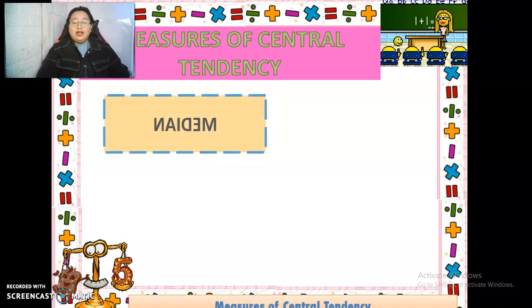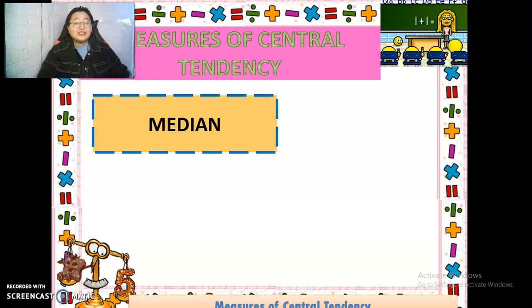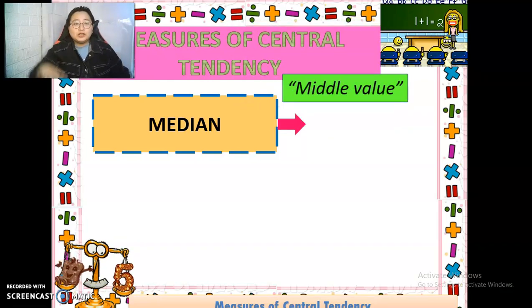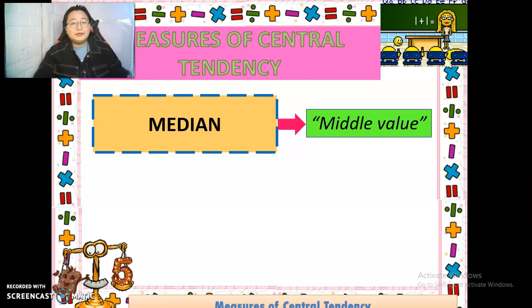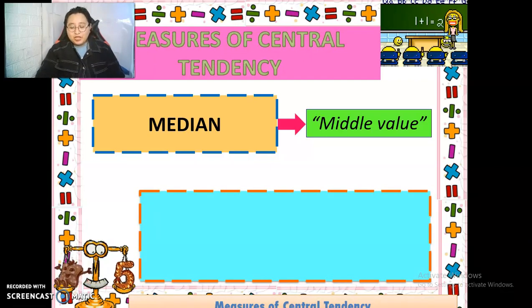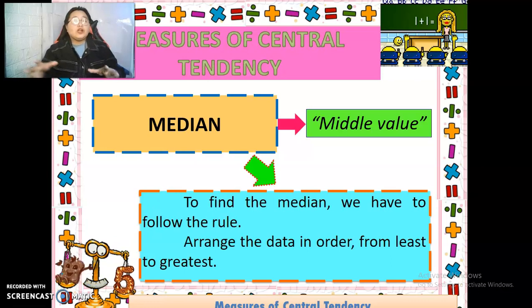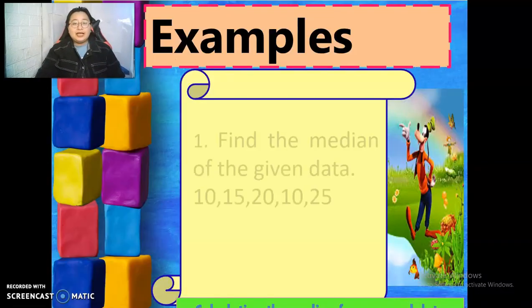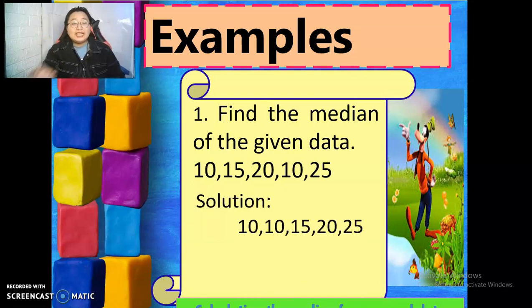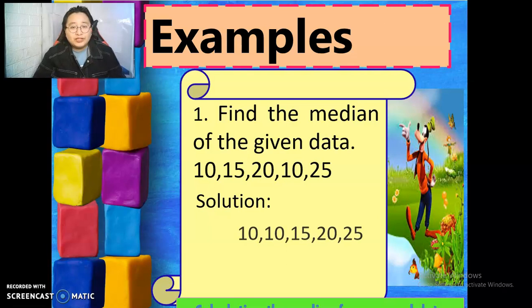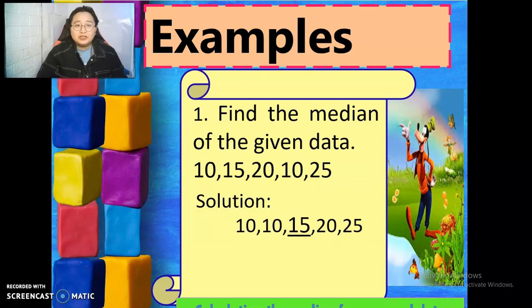Let's move on to the next measure of central tendency, which is the median. When we say median, what comes into your mind? Yes, the middle value. Very good. So how do we get the middle value? There are two ways. First, arrange the data in order from least to greatest. Let's say, for example, find the median of the given data 10, 15, 20, 10, and 25. The first thing we do is to arrange the data points. After arranging, you can now look for the middle value. The middle value is 15.